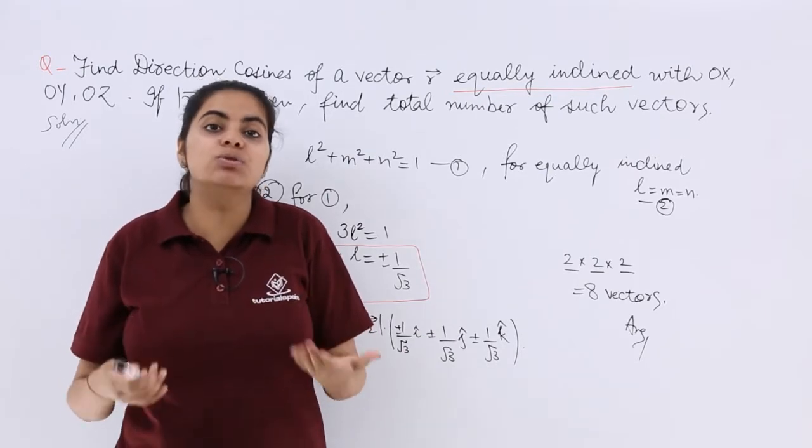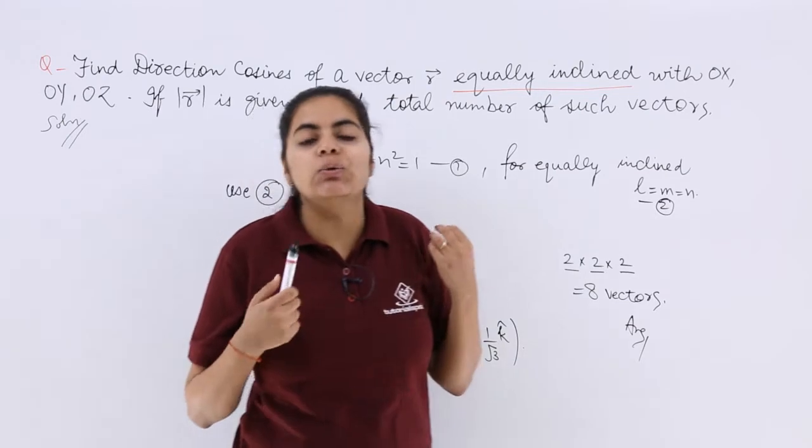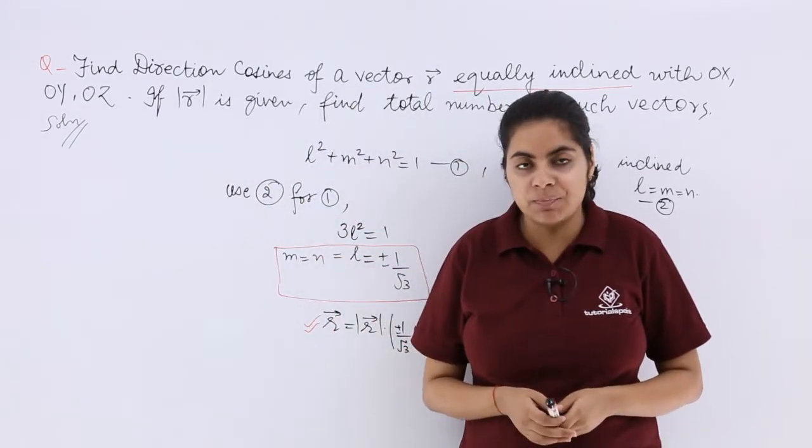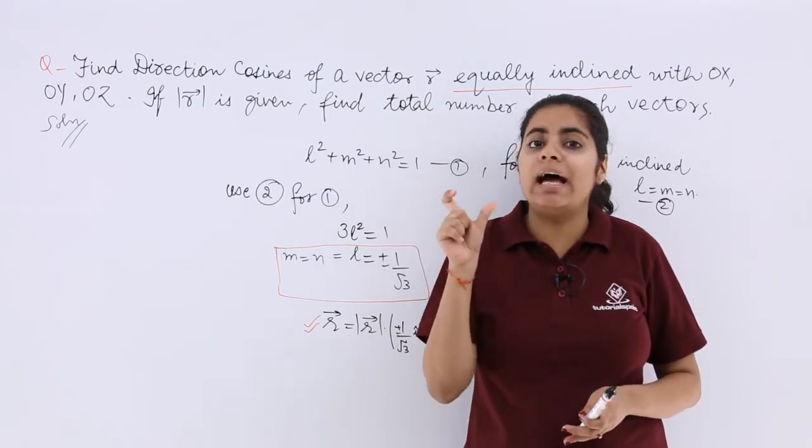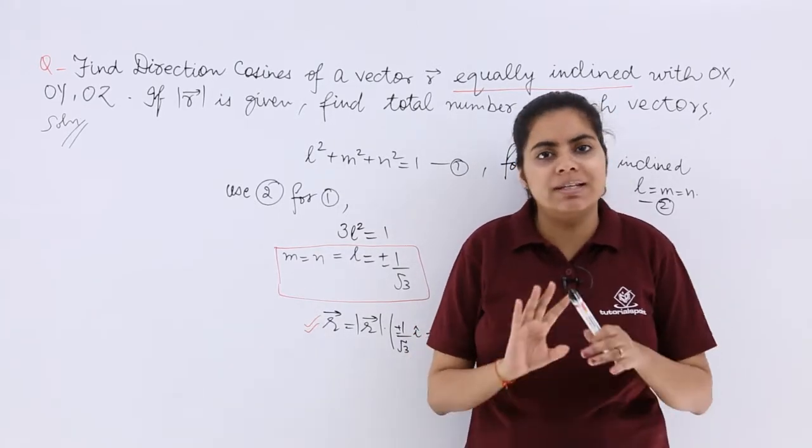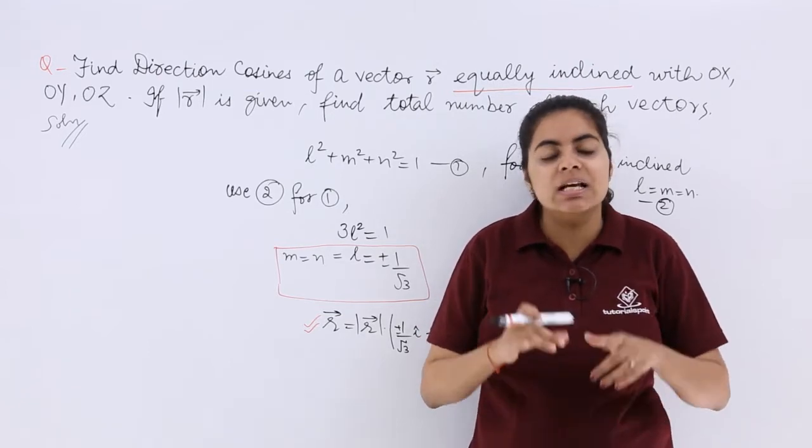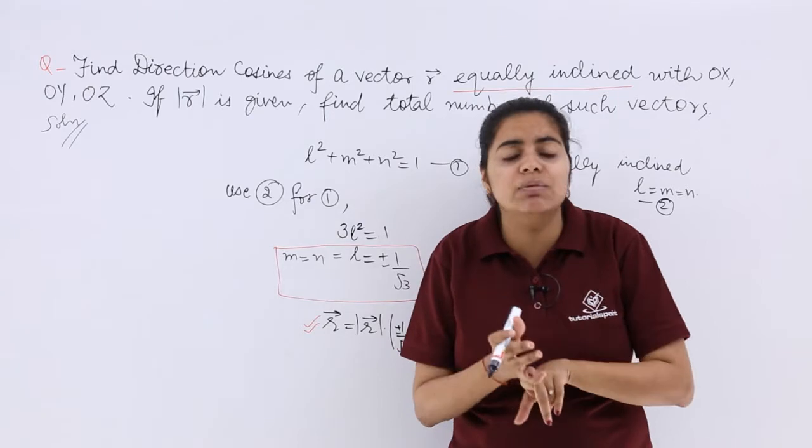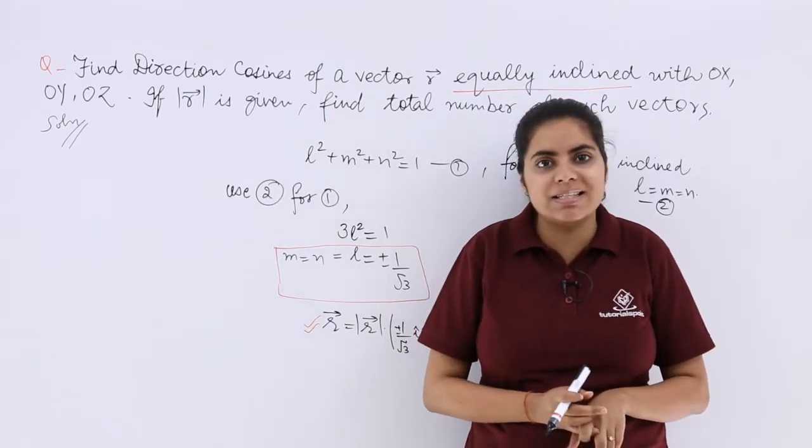So how to do that question? As the wording says, you have to find the direction cosines, means you have to find the L, M, N components. Also it has been given that the vector is equally inclined to the axis - equally inclined to the x axis, y axis, and z axis.